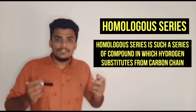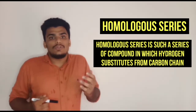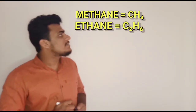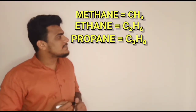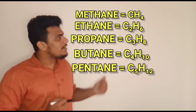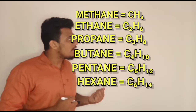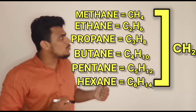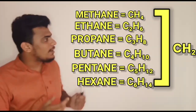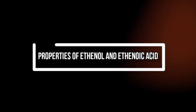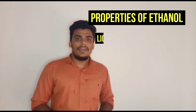The next topic is homologous series. A homologous series is a series of compounds with the same functional group where hydrogen is substituted by a carbon chain. For example: CH4 is methane, C2H6 is ethane, C3H8 is propane, C4H10 is butane, C5H12 is pentane, C6H14 is hexane. The difference between each successive compound is CH2. This pattern is consistent across each functional group of carbon.